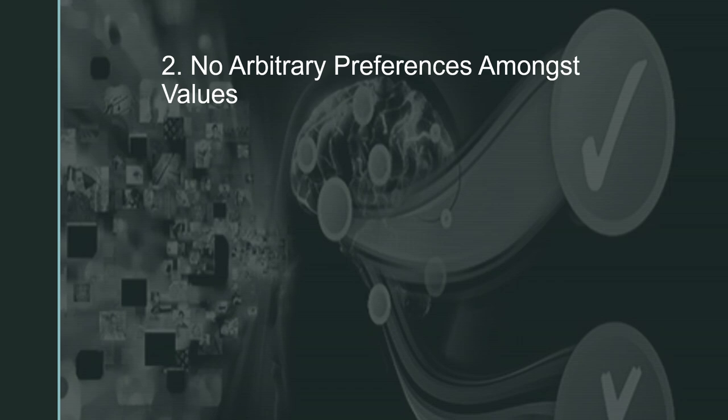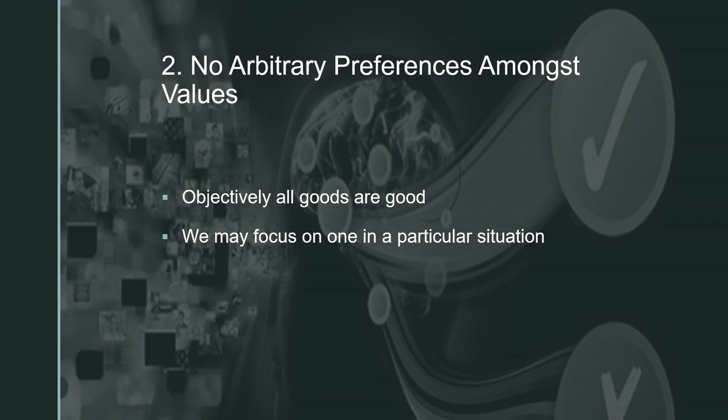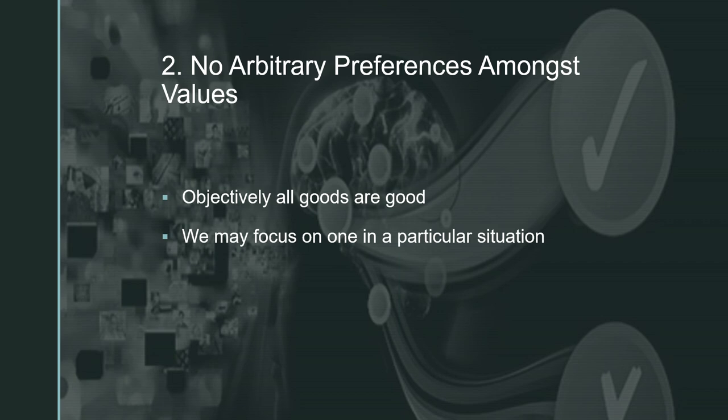Secondly, we must have no arbitrary preferences amongst values. All seven basic goods are objectively and equally good, so none of them should ever be ignored or over-exaggerated. Circumstances sometimes dictate that we must focus on one good — for example, if I am drowning, then life is what I focus on rather than play. Yet this is subjective to my situation. In fact, play and life are equally, objectively and intrinsically good, so our life plans should then make reasonable allowance for participation in all the values.